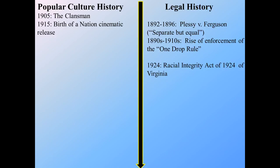By 1924, we have the Racial Integrity Act of 1924 in Virginia — one example of many acts of the time that basically said African-Americans were not able to marry people identified as white. Going back to the one-drop rule, if you had one or two great-great-great grandparents of African descent, there were people you were legally not allowed to marry.